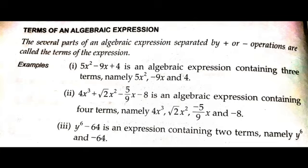Here I have considered three different types of examples containing different numbers of terms. The first one, 5x² − 9x + 4, is an algebraic expression containing three terms: the first term is 5x², the second term is −9x, and the third term is 4.